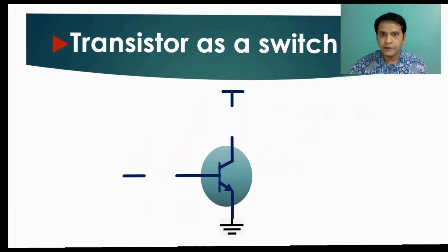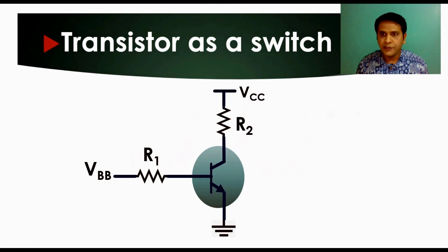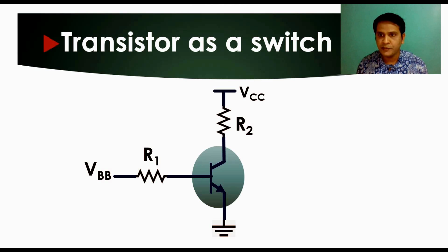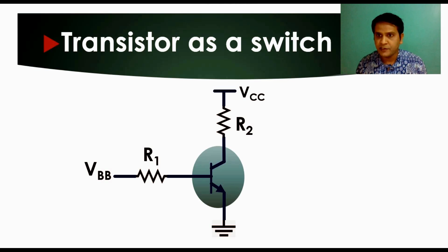To drive your transistor as a switch, there are two modes of operation. The first is the transistor working in cutoff mode — also called open switch mode. The second is saturation mode — also called closed switch operation. So there are two modes: cutoff mode or open switch, and saturation mode or closed switch.